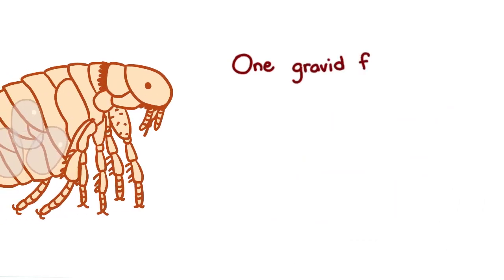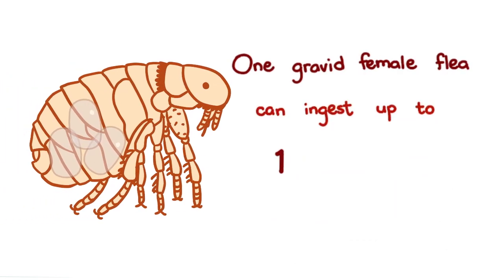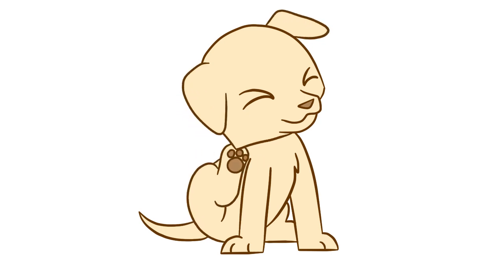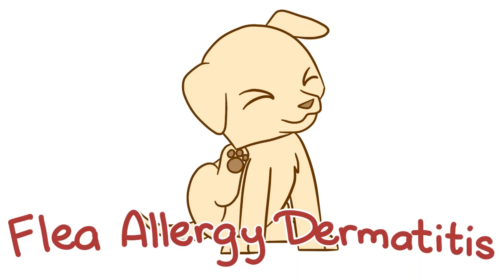One gravid female flea can ingest up to 13.6 microliters of blood in the span of 24 hours. It's less than that of one adult hookworm, but imagine having a hookworm infection together with a flea infestation. On top of that, their bites are very itchy, especially when the dog or cat develops a hypersensitivity reaction towards their bites. In a hypersensitive animal, even just a few fleas can be intolerable. This condition is known as flea allergy dermatitis.